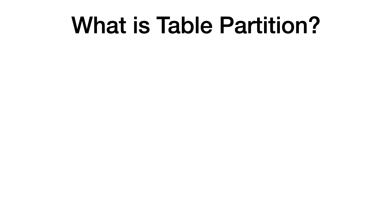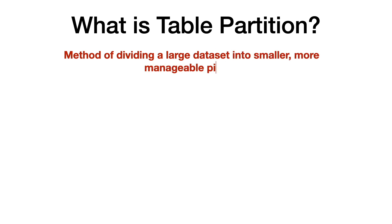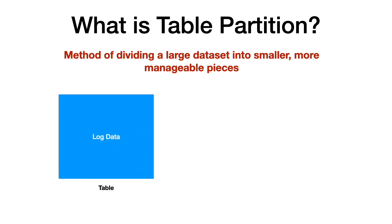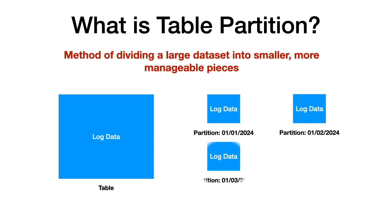In the context of AWS Glue and data processing, table partitions refer to a method of dividing a large dataset into smaller, more manageable pieces. This division is based on a particular column, often a date or a category, which helps in organizing and querying the data more efficiently. For example, if you have a table that stores log data, instead of having a single massive table, you can partition the table by date. Each partition would then contain the logs for a specific date, making it much faster to query without having to scan the entire dataset.